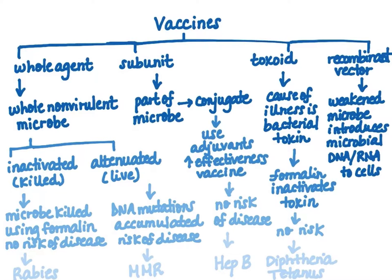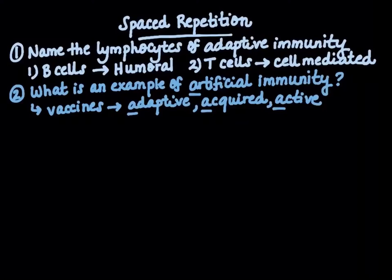Finally, recombinant vector vaccines use a weakened microbe to introduce microbial DNA and/or RNA into our cells. These are newer, experimental vaccines currently being researched for diseases such as HIV.